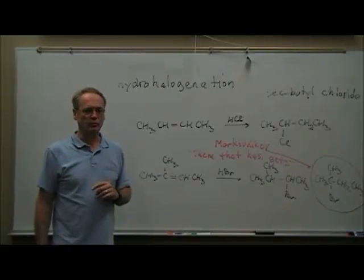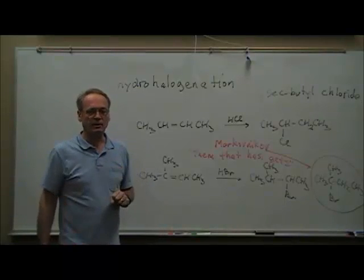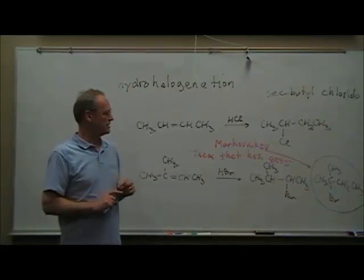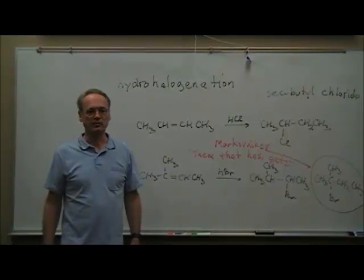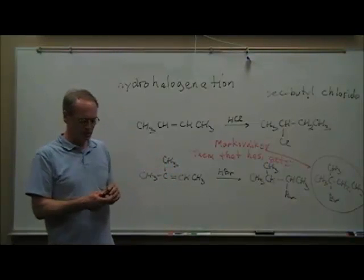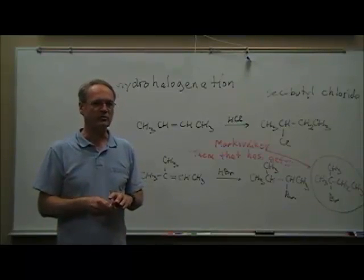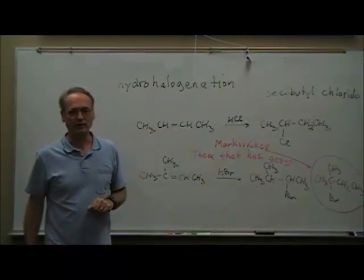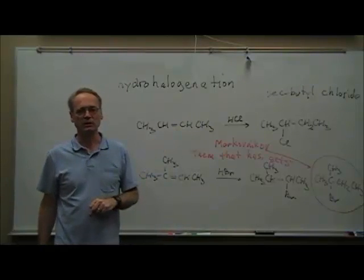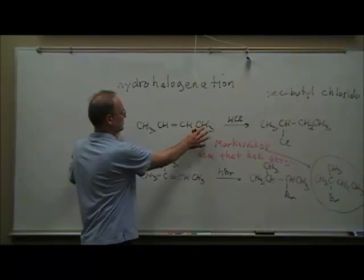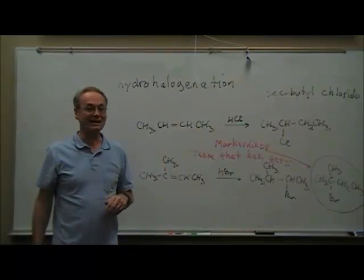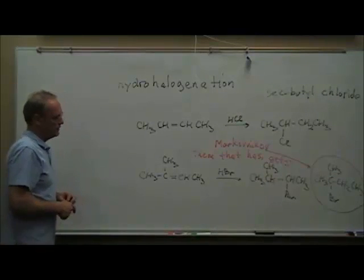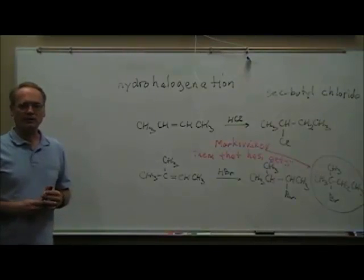There are some cases where Markovnikov's rule won't help us — for example, if you start with an alkene where both carbons have the same number of hydrogens but are still different from each other in some way. In that case, you'll end up with both products. I won't give an example right here, but I would strongly urge you to try to come up with one yourself — an alkene where both carbons have the same number of hydrogens, say one each, but the end groups differ — and see if you can draw both products and notice that Markovnikov's rule won't help in that case.